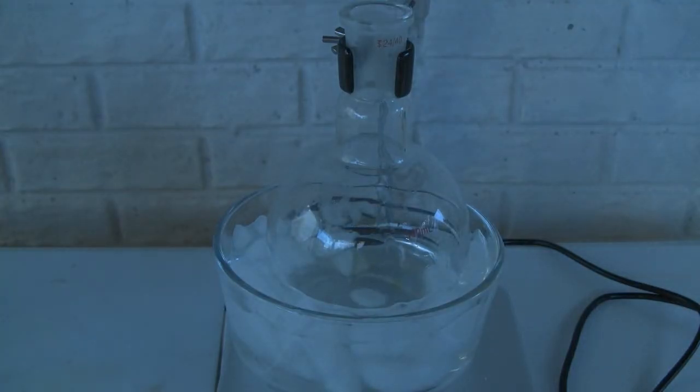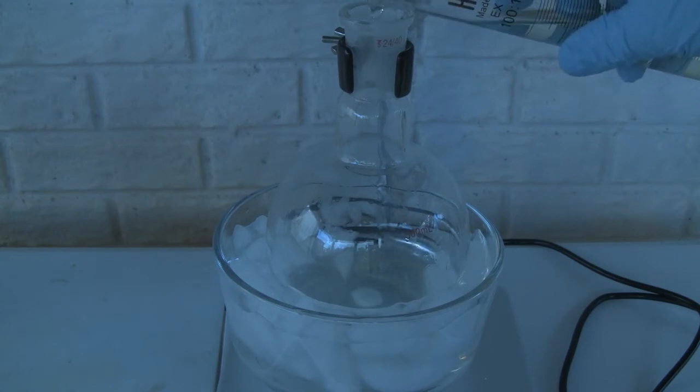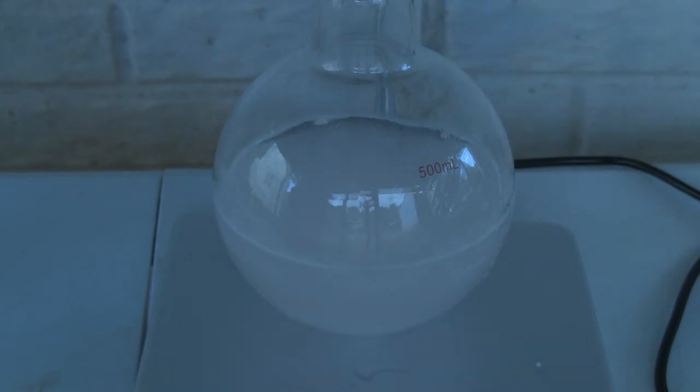Next, the 7.5% bleach is slowly added in portions to prevent excess heat that can lead to chlorate formation. Once the bleach is fully added and the solution is chilled at about 5 degrees Celsius, all of the phthalimide is added at once and allowed to stir until fully dissolved.